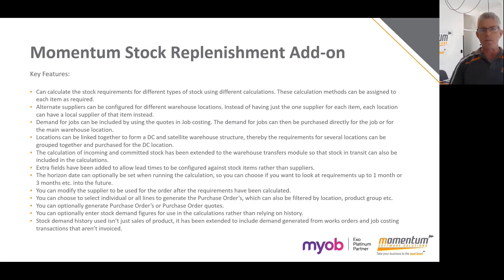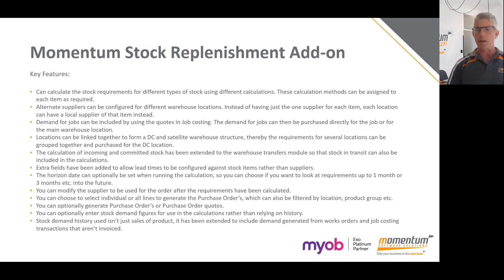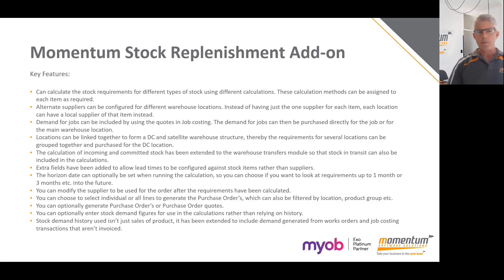If you have a scenario where you have multiple warehouses — say warehouse A does the ordering and then replenishes or transfers to warehouse B — you can actually link those warehouses together and include the demand for warehouse B in warehouse A's purchase order. We have also made sure that when looking at the quantity of incoming committed stock, that includes stock transfers going between warehouses. The standard feature does not do that.